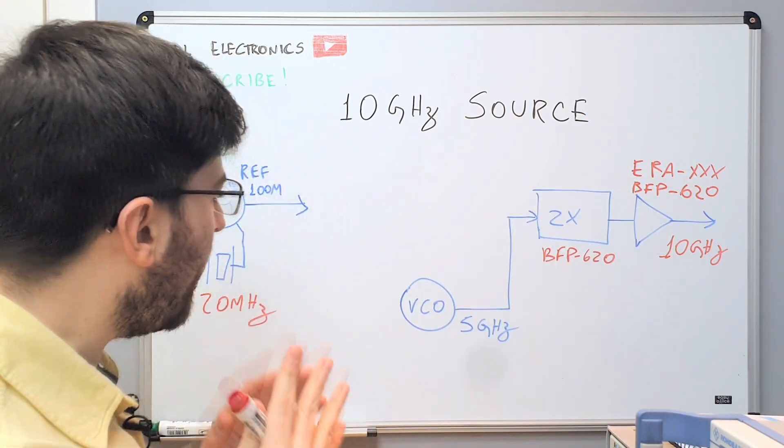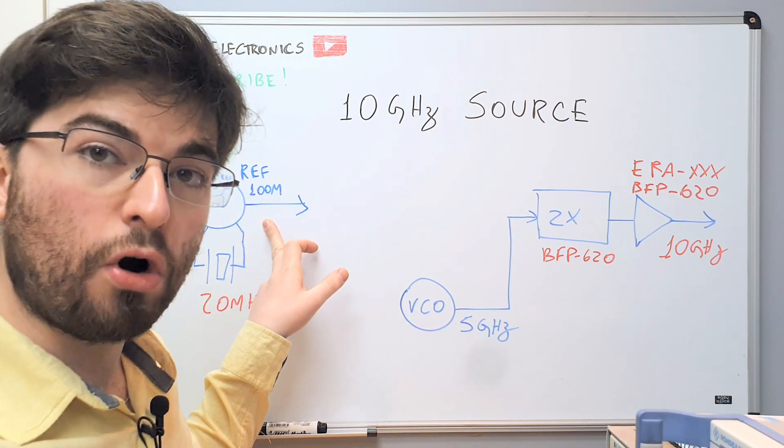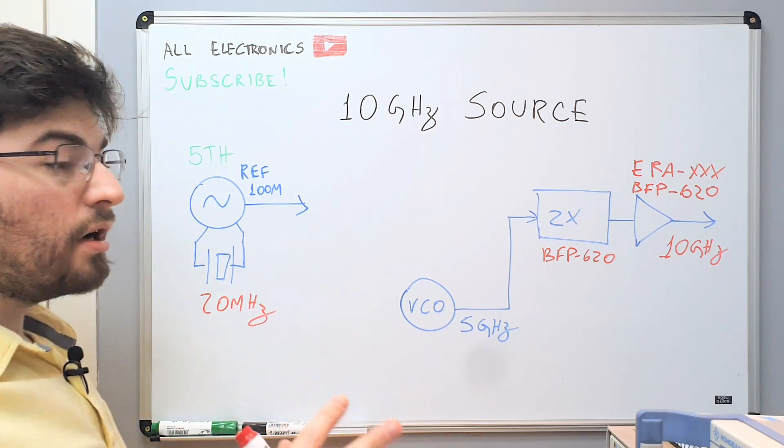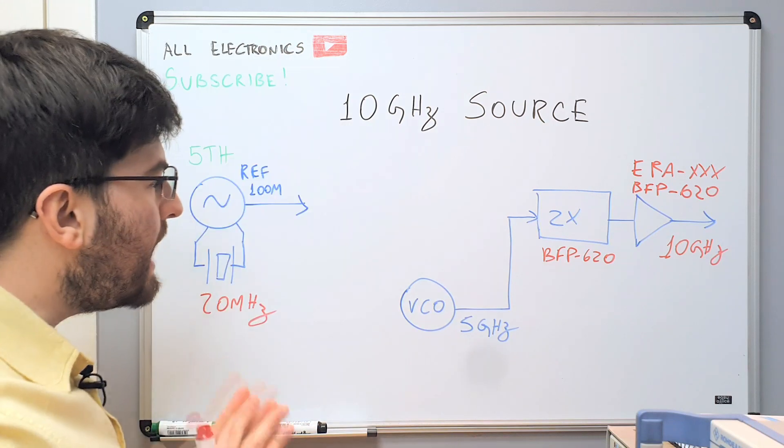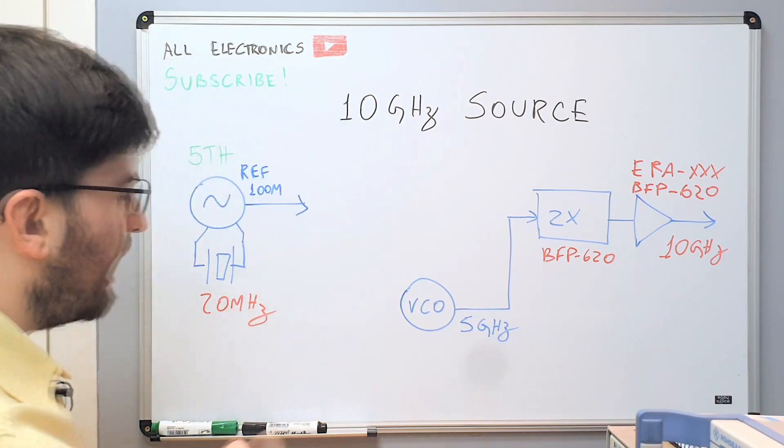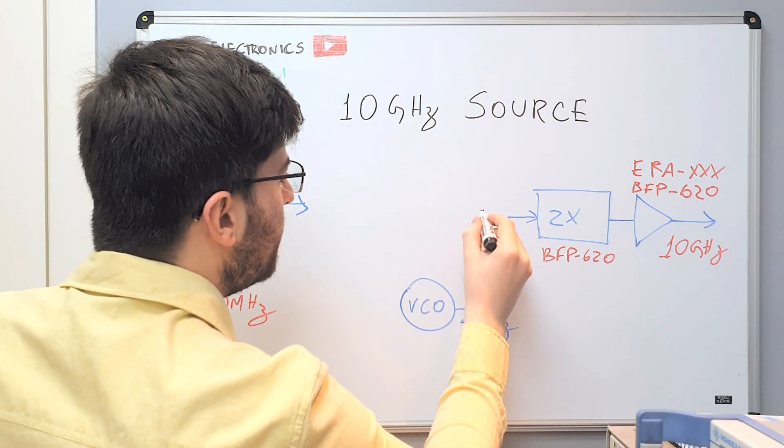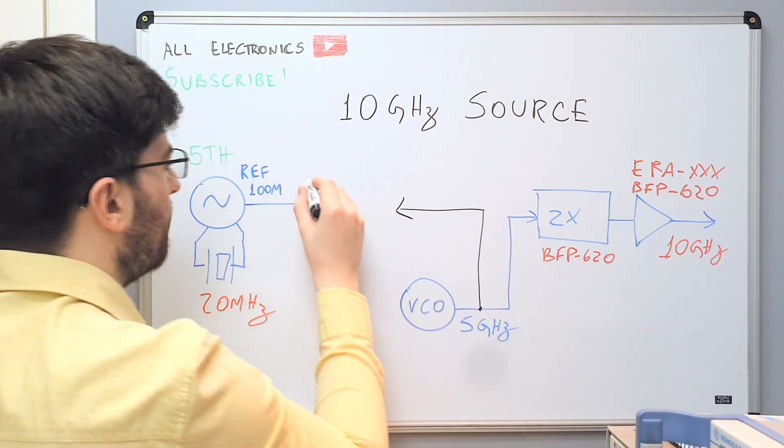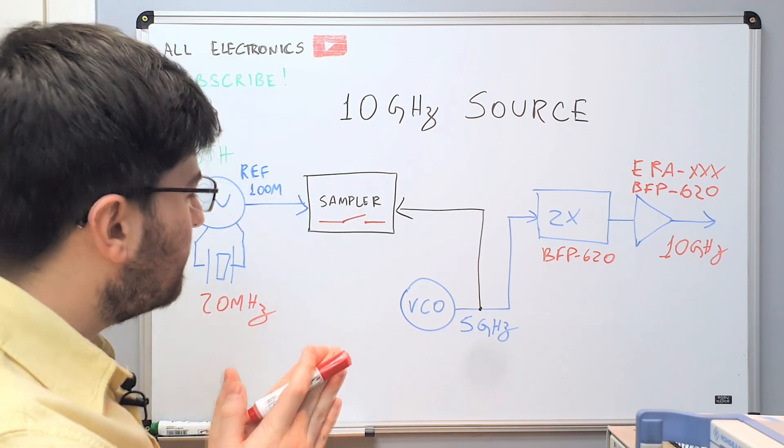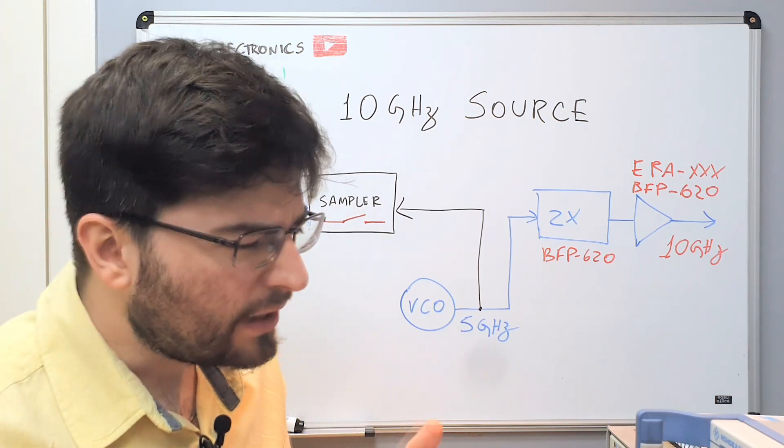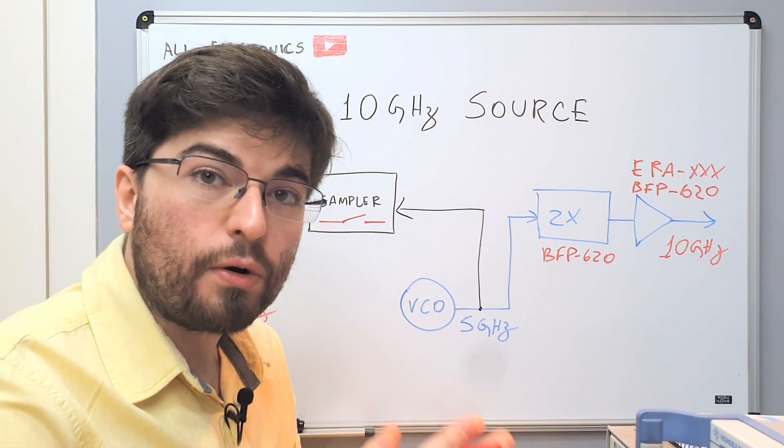This is the way we are going to generate the 10 GHz signal with a 5 GHz VCO and a doubler and an output amplifier. And now we need to phase lock this amplifier to a 100 MHz source, reference source. This is not easy and I don't want to use pre-scalers because I don't like pre-scalers. My idea here is to sample part of the VCO signal and input this sample here in a sampler. We can think of the sampler as a very high-speed mixer.